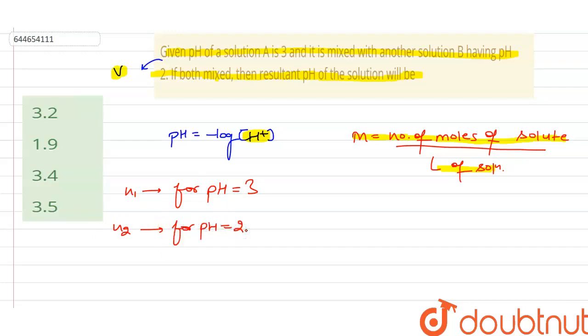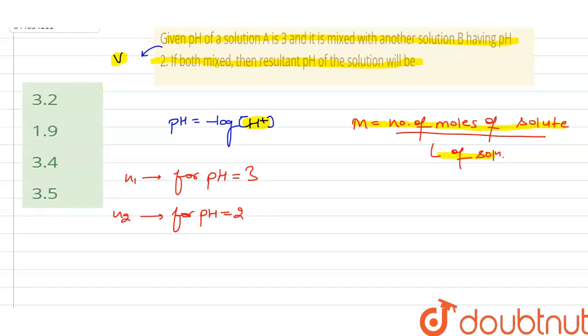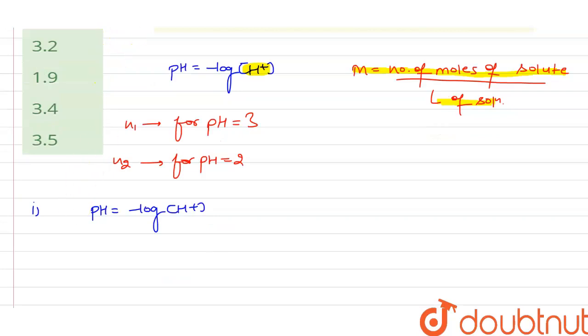So from here, for the first case having pH equal to 3, we know that pH is equal to minus log of H+ ion, which is a form of concentration or molarity. So here pH is given as 3 equals minus log of n1 upon V, where we have supposed the number of moles for H+ ion as n1 and the volume as V of the solution.